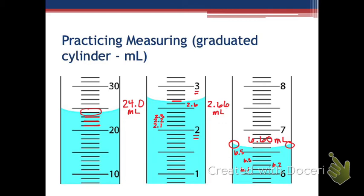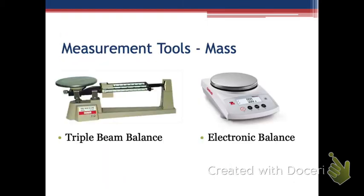Graduated cylinders are really the only devices in our lab that give us clear, exact indications of volume. Other glassware has markings around 50 or 100 milliliters but they're not very precise. This device here is called a triple beam balance. Why do you think it's called triple beam? Because there are three beams, and each one measures something different — they all measure mass in grams.